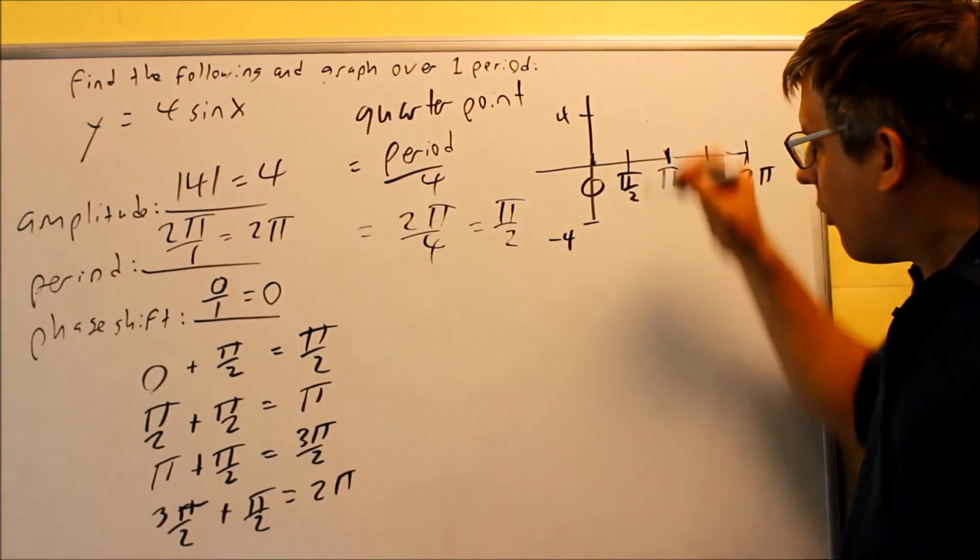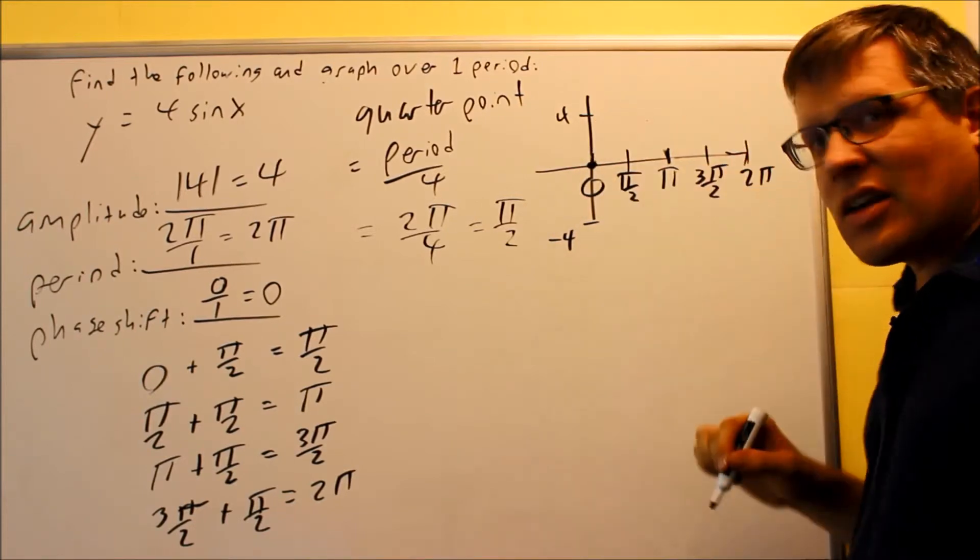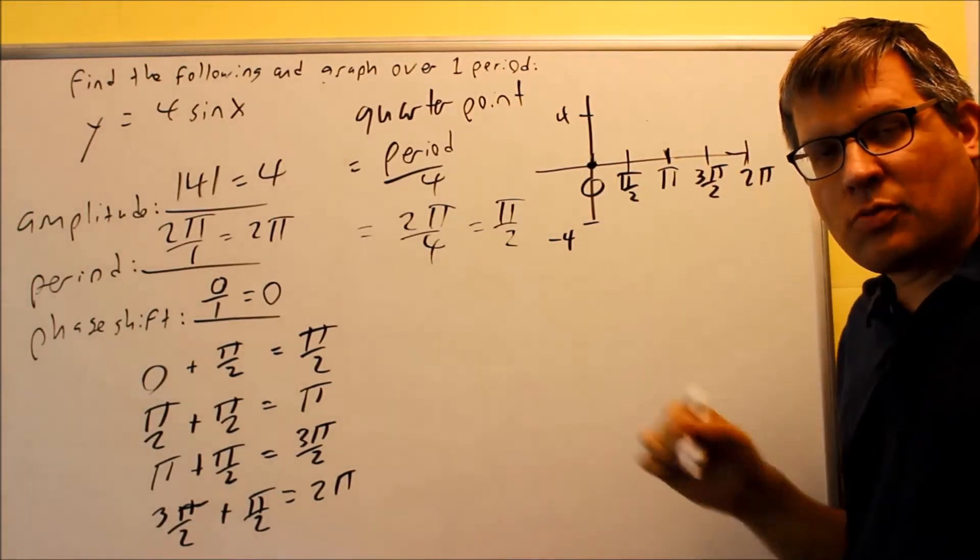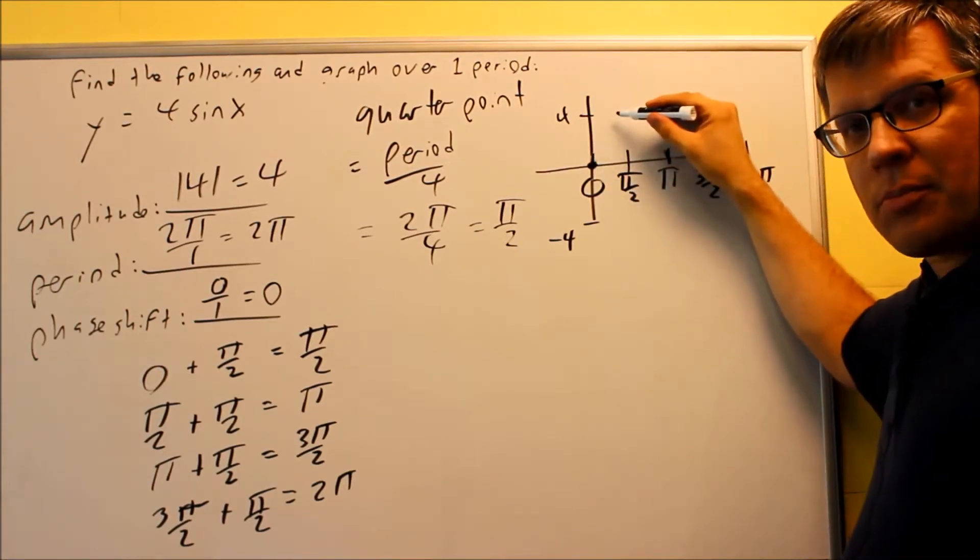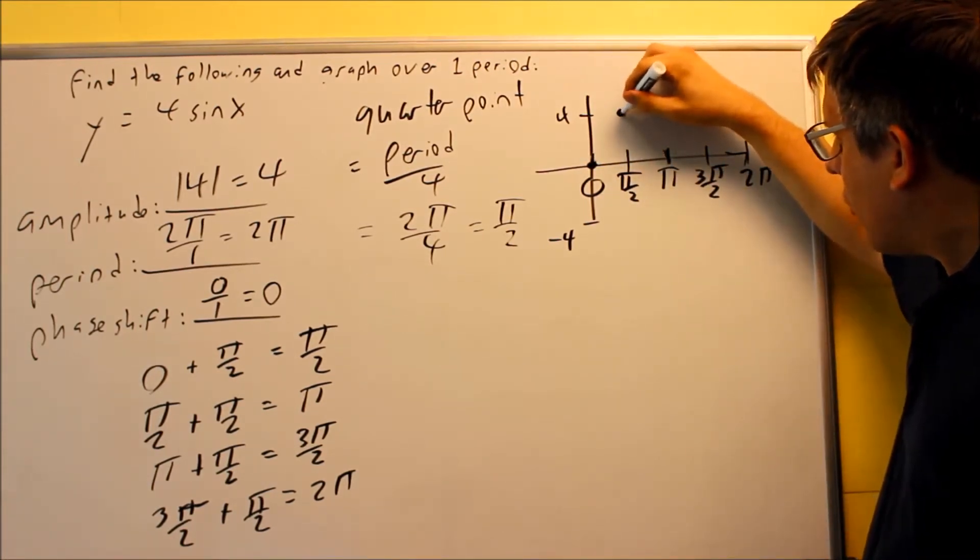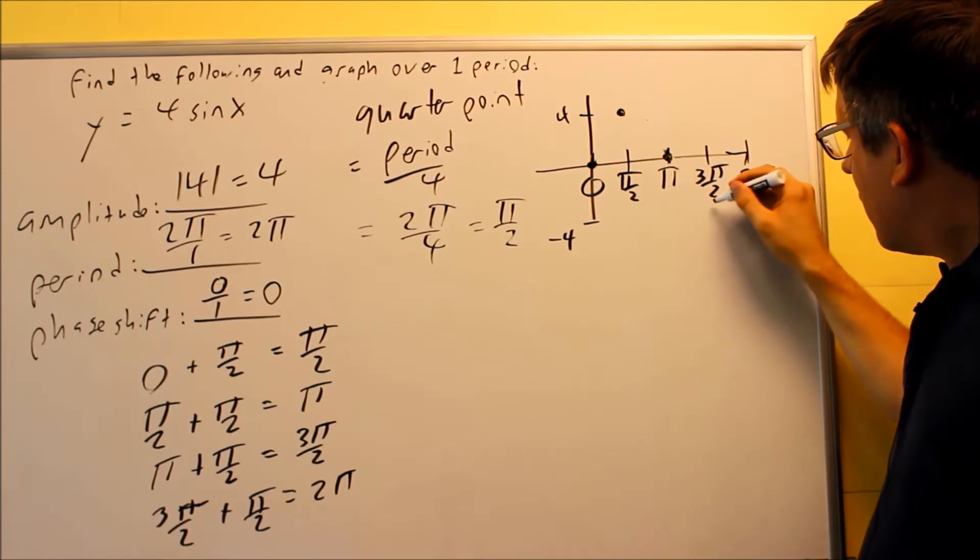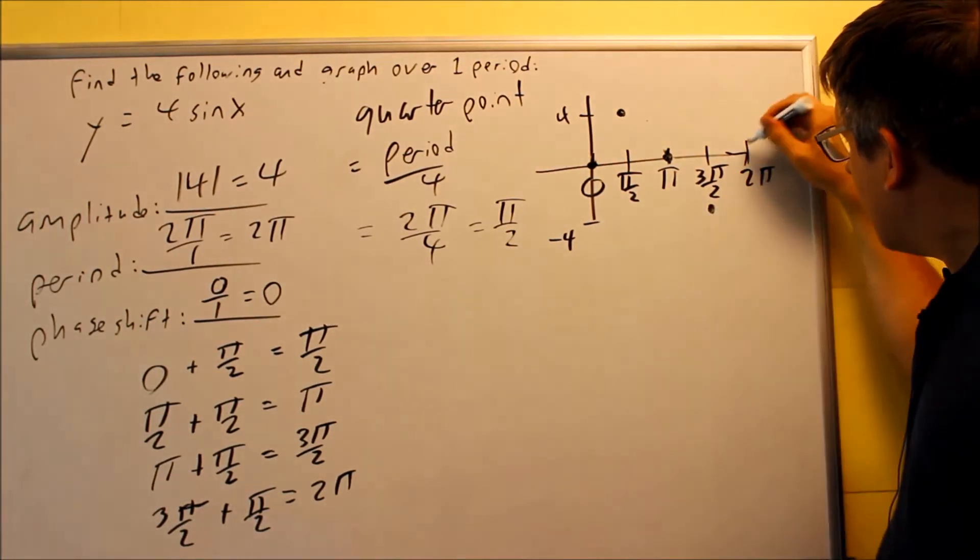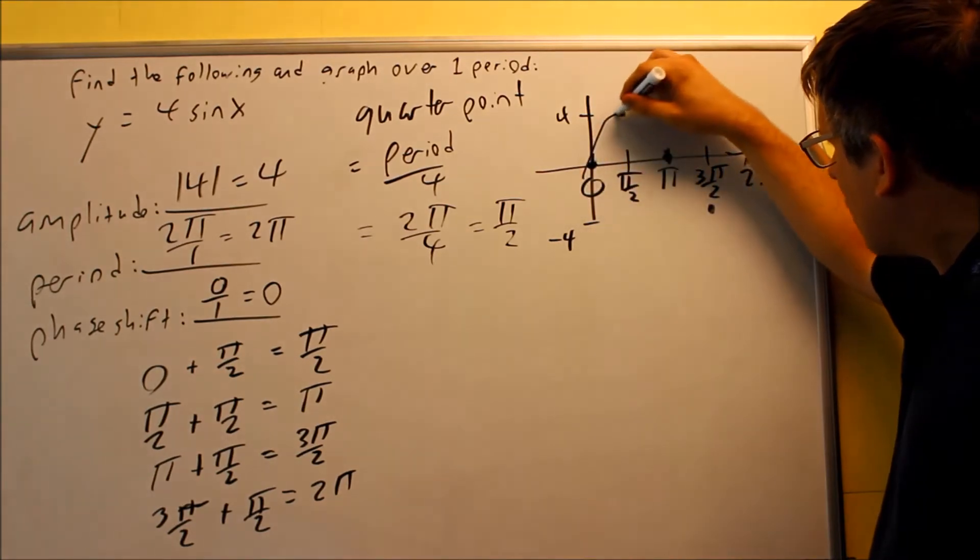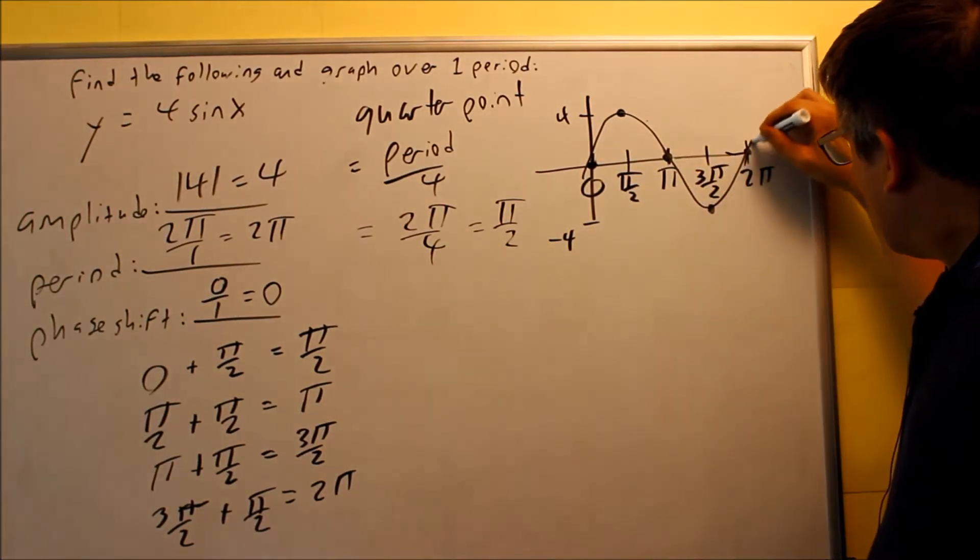Now, sine graphs, the sine graphs always begin on the x-axis. That's what our base graph does. It always starts at the x-axis. And then, what it does is it goes up to here. It'll go up to that one, down to here. It's going to go down to three pi, down here at negative four at three pi over two, and back up to here. So, the graph itself is going to look like this.